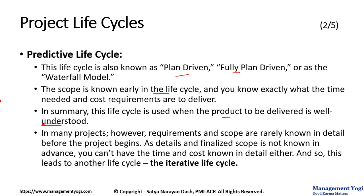In many projects, however, requirements and hence scope are rarely known in detail before the project begins. Not every time will you know all the requirements, and hence scope is not fully known. As detailed and final scope are not known in advance, you can't have the time and cost known in detail either. Because you don't know the scope, how can you fix the time or cost? This leads to another life cycle known as the Iterative Life Cycle.